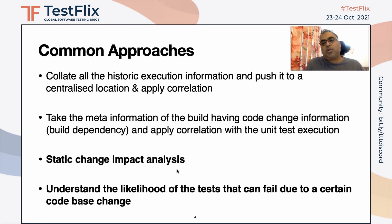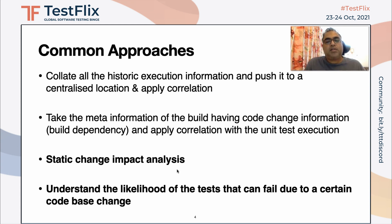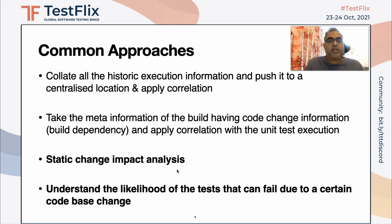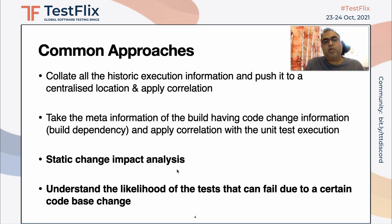The second approach is to take the meta information of the build — you analyze the build tool and its output, then correlate that output with the unit test executions. If you have unit tests, you run those tests and when the build tool performs the build, you take that meta information and start getting the correlation from it.